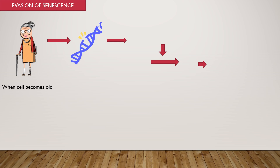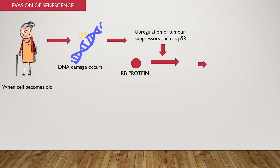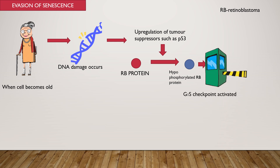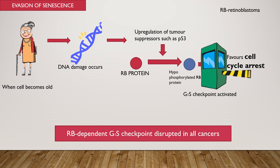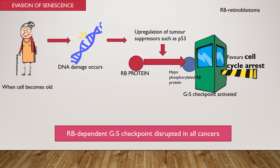When cells become old, DNA damage occurs. In response to the accumulation of DNA damage, there is upregulation of tumor suppressors such as p53. These tumor suppressors maintain the RB protein in a hypophosphorylated state, which leads to activation of the G1/S checkpoint and gradually favors cell cycle arrest. But in cancers, the RB-dependent G1/S cell cycle checkpoint is disrupted, and hence the cell escapes senescence.